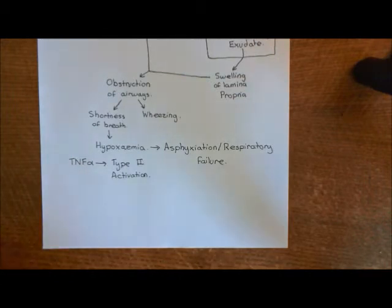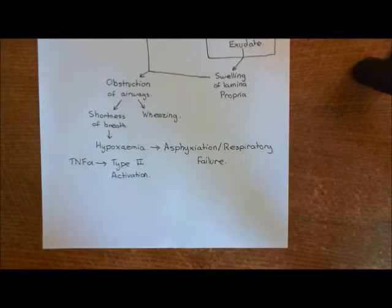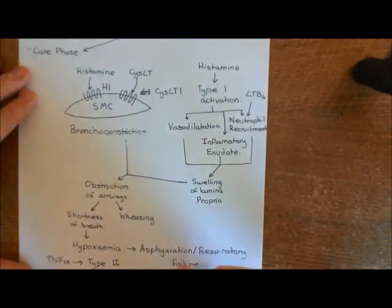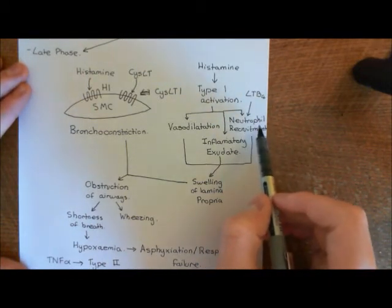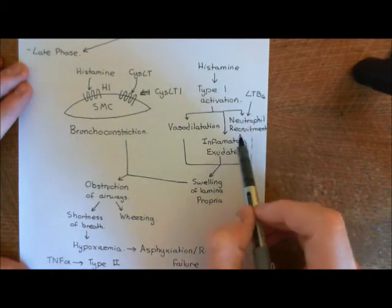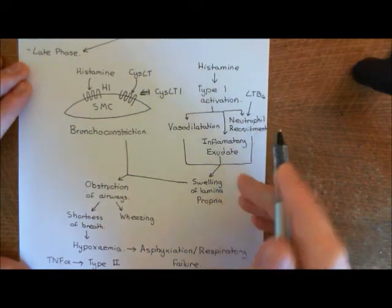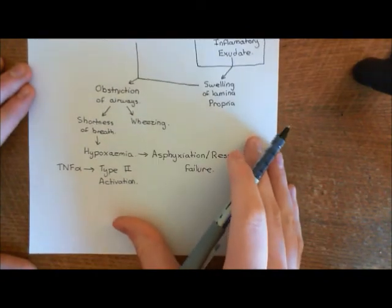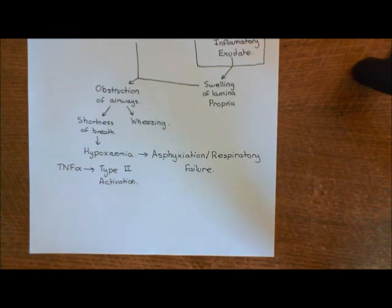In type 2 activation, by contrast, you get changes in gene expression within the endothelial cells. This leads to more vasodilatation and increased vascular permeability, but more importantly it leads to the recruitment of a different type of leukocyte. Type 1 activated endothelial cells can only recruit neutrophils, but type 2 activated endothelial cells can bring in a far more impressive repertoire of leukocytes. What's going to happen is they're going to bring in T helper 2 cells.